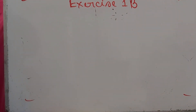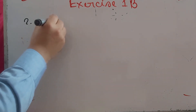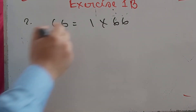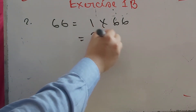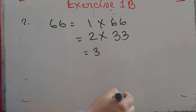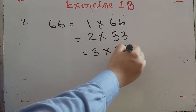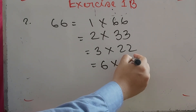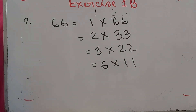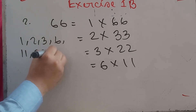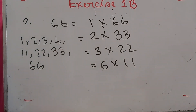Number 2: Write down all the factors of 66. Dividing 66 by 1 gives 66; by 2 gives 33; by 3 gives 22; by 6 gives 11. So the factors of 66 are 1, 2, 3, 6, 11, 22, 33, and 66.